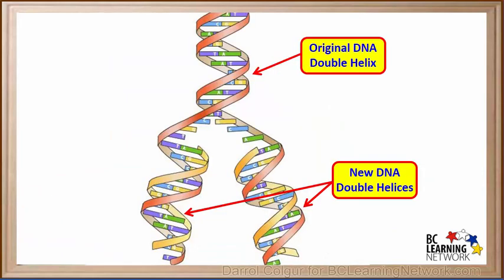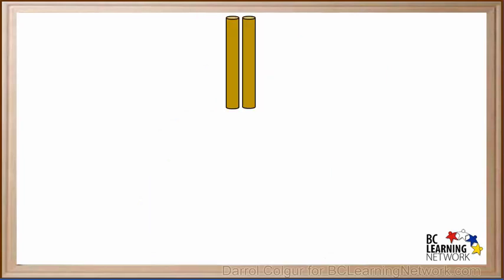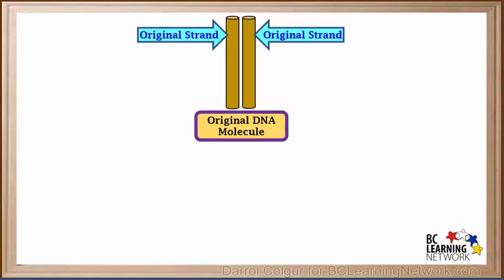Here's another diagram illustrating DNA replication. At the top is the original DNA helix, and at the bottom are the new DNA helices. We'll take a very simplified view of this process. These bars represent the two strands of the original double-stranded DNA molecule.